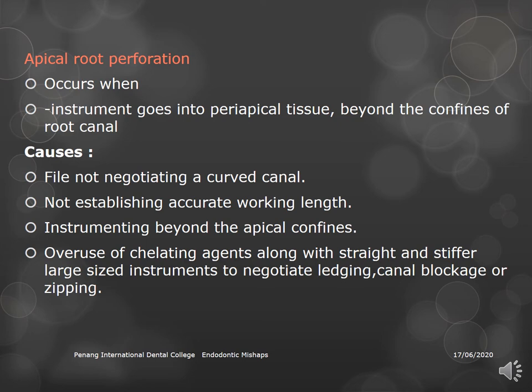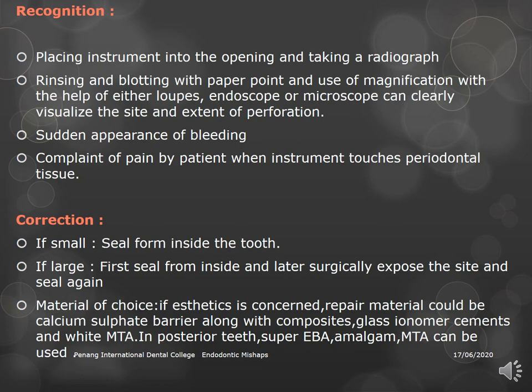Causes of apical perforation include the file not negotiating a curved canal, inaccurate working length, instrumenting beyond the apical confines, overuse of chelating agents with straight stiff large instruments to negotiate ledging or canal blockage. Recognition involves placing an instrument and taking a radiograph — the file will appear to deviate from the canal path into periradicular areas. Sudden bleeding and patient pain when the instrument contacts the periodontal ligament are also signs.